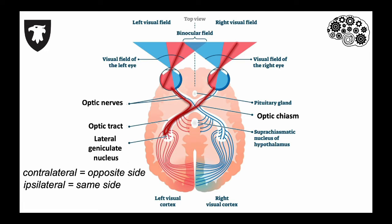The axon terminals synapse here, and then the signal gets sent through the optic radiation to the primary visual cortex on the contralateral side of the brain.